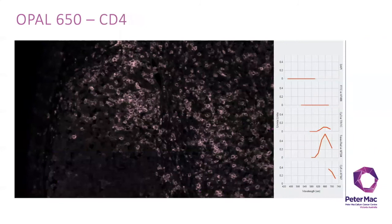T helper cells were identified with opal 650 and a CD4 antibody and here we have emission peaks in both Texas red and Cy5.